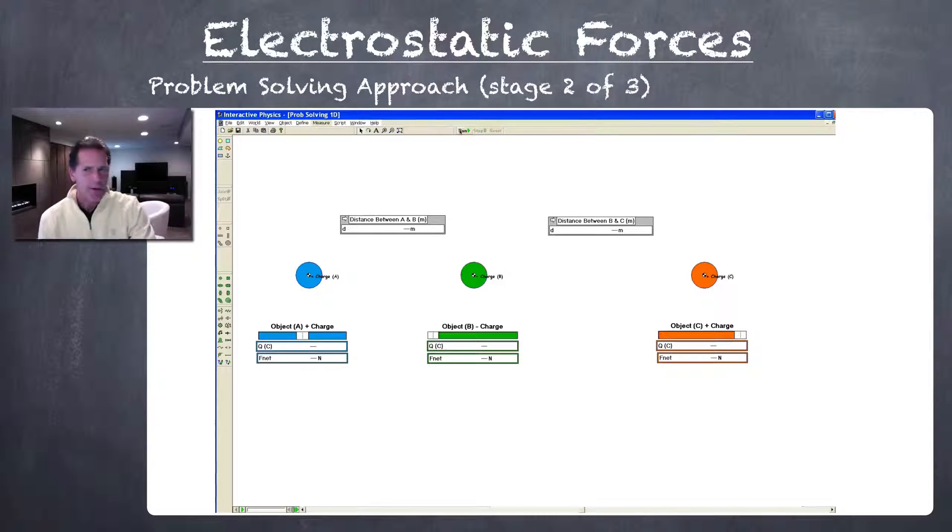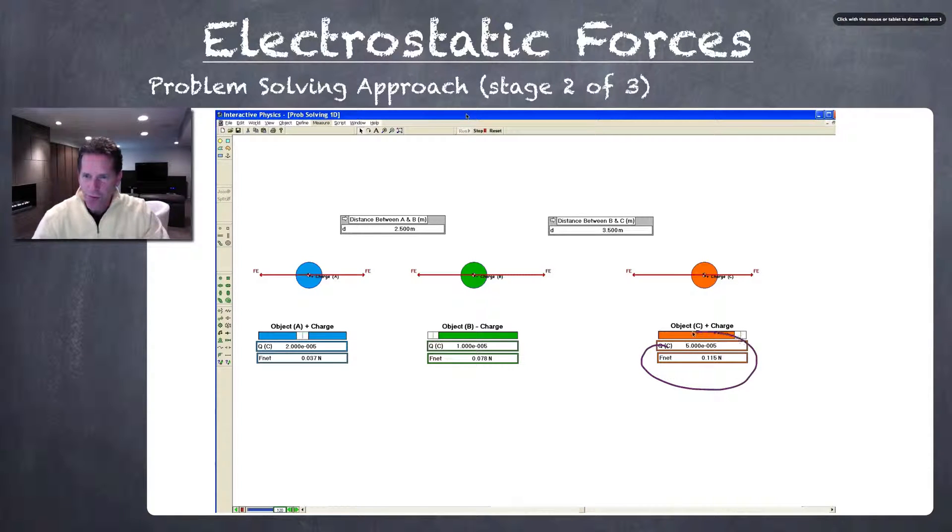Let's see how that turns out. I've got a computer simulation that illustrates what would happen to these three charges. At the very beginning, you can see the size of the net force vector illustrated down here at the bottom. For example, for the orange charge, the net force should be about 0.11 Newtons. You can see from the two vectors, the one to the left here is larger than the one to the right.